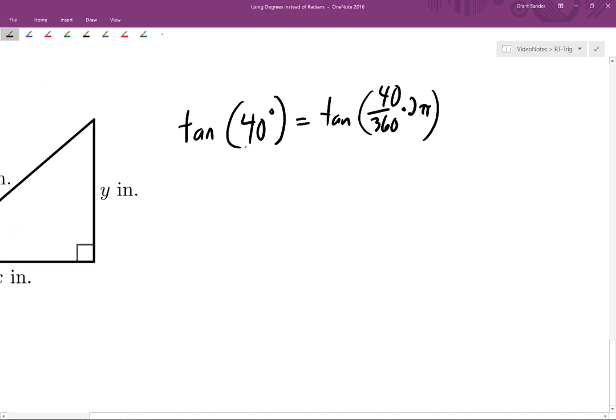So converting 40 degrees into a number of radians looks like this, and therefore this expression right here is what we would enter into our calculator to actually determine the slope of the hypotenuse of this right triangle.